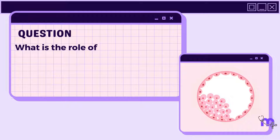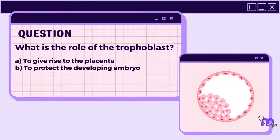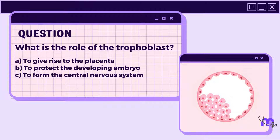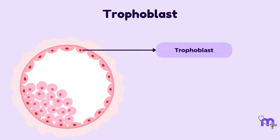What is the role of the trophoblast? A. To give rise to the placenta. B. To protect the developing embryo. C. To form the central nervous system. D. To produce the amniotic fluid. The correct answer is option A. The trophoblast is the outer cell layer of the blastocyst that plays a key role in forming the future placenta.